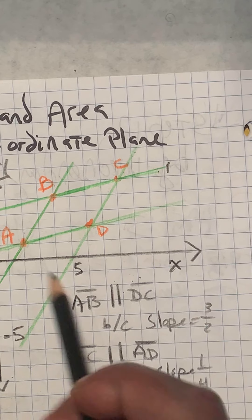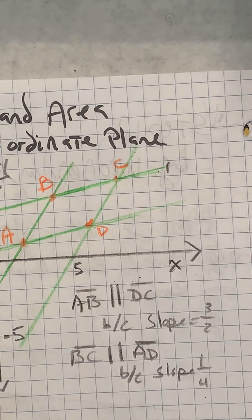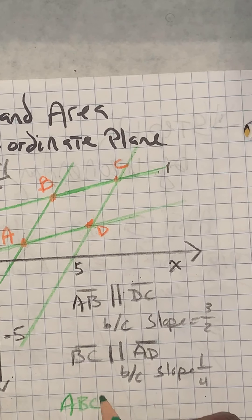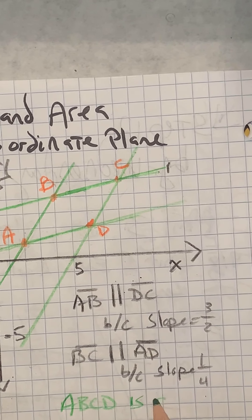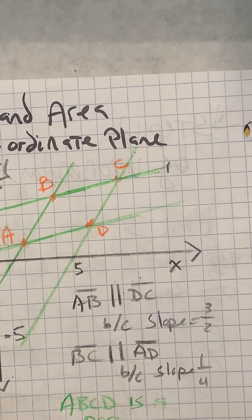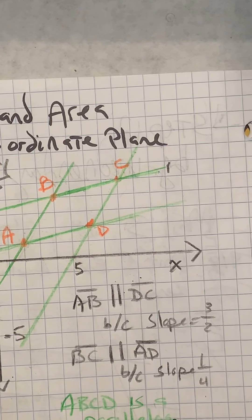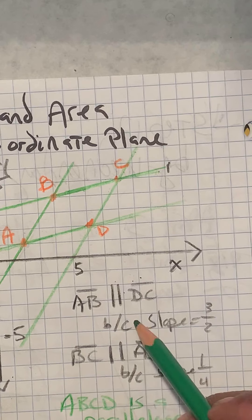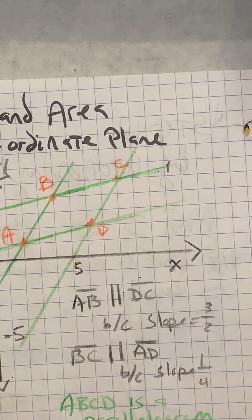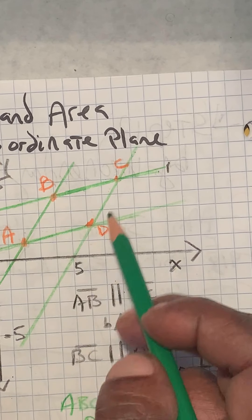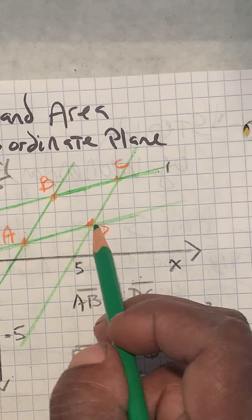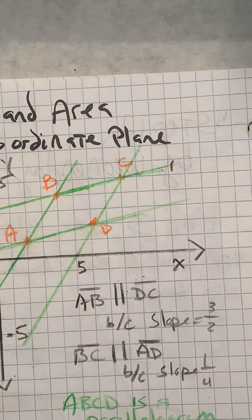So by that we've proven that ABCD is a parallelogram. Opposite sides are parallel. Well, we haven't proven it yet. We just showed the opposite sides are parallel. We haven't proven that these are the same length. To do that, we need something else. We need what's called the distance formula.